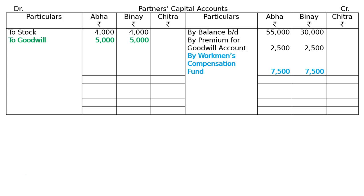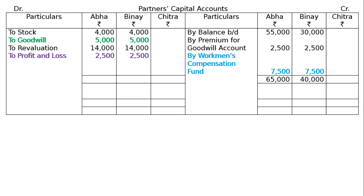Goodwill already appearing in the books at Rs. 10,000 is to be written off among old partners in old ratio: debit Abha's and Vinay's capital accounts, credit goodwill account. To revaluation account: Abha's share of loss Rs. 14,000 and Vinay's share Rs. 14,000 (total Rs. 28,000 divided equally). Balance the profit and loss account — it appears on the liability side — debited to partners' capital accounts in old ratio: Rs. 25,100 each. Credit-side totals: Rs. 65,000 for Abha and Rs. 40,000 for Vinay. Balances carried down: Abha Rs. 39,500, Vinay Rs. 14,500.